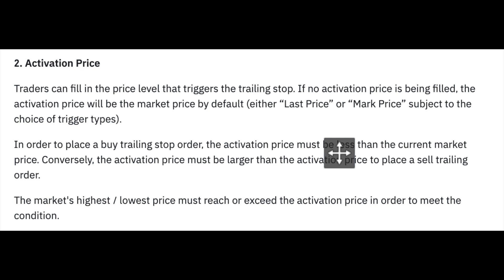The last thing you need to know is something called the activation price. This is the price that activates or makes the trailing stop order start working. If you're setting the activation price for a long position, you have to set it higher than the current price, and for a short position you have to set it lower than the current price. You also have the option of not setting anything, and it will default to either the last price or the mark price. If the price does not reach the activation price you set, your trailing stop order is not going to get activated and it's not going to work.